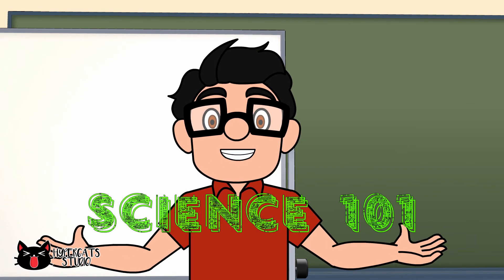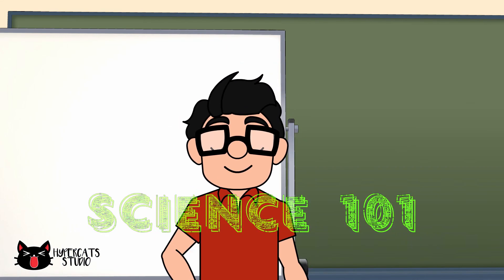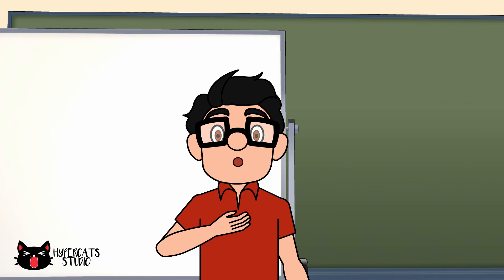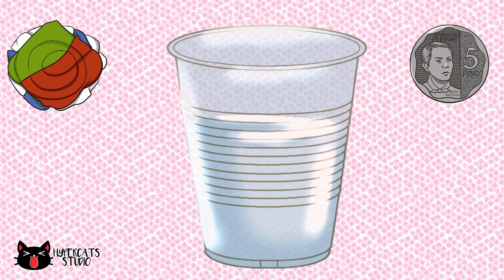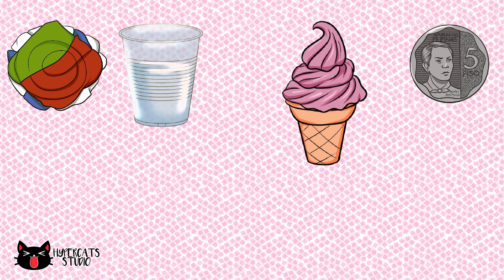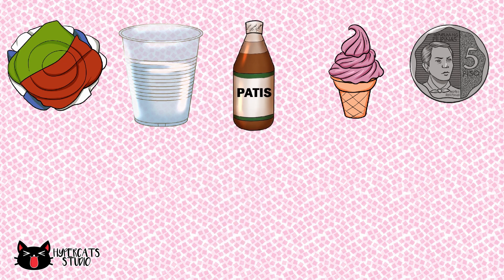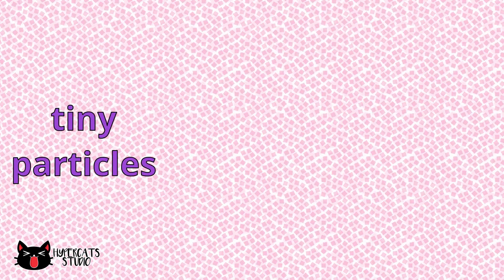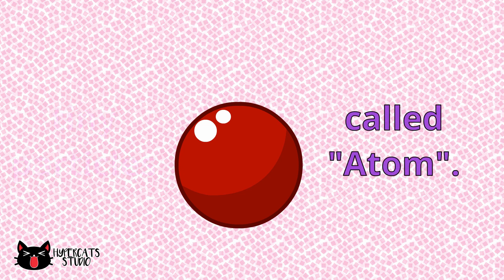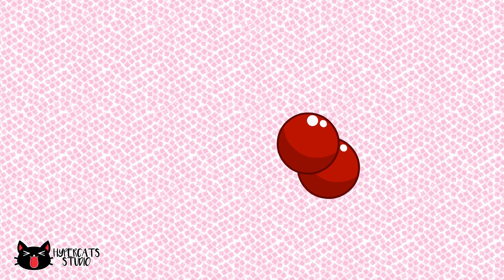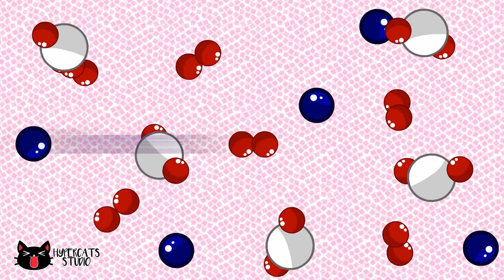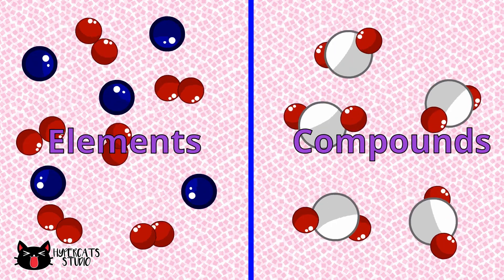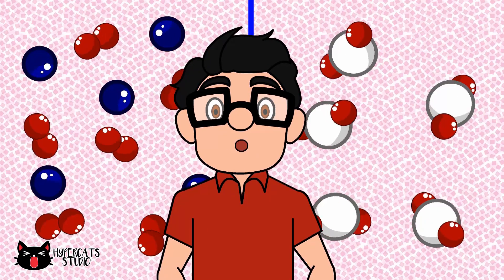Welcome to Science 101. Today we are going to talk about elements and compounds. This rag, coin, water, ice cream, and fish sauce are all matter. Matter is composed of tiny particles called atoms. When atoms combine, they form molecules. These molecules can be classified as elements or compounds. Do you know the difference between the two?